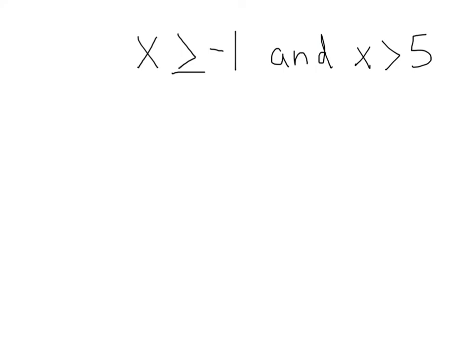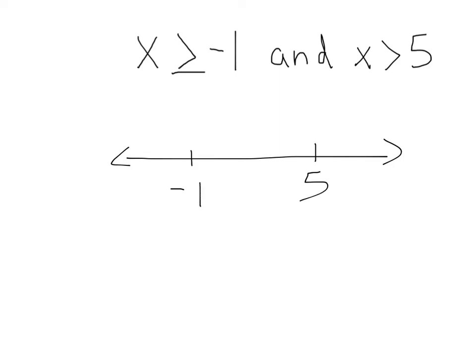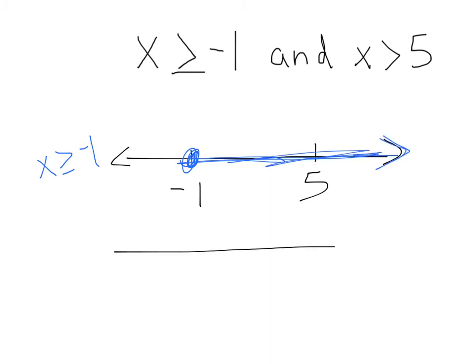For these next couple examples, I'll save time by skipping the solving step since they're already solved — but remember, you have to solve first if they're not. We have x is greater than or equal to negative 1, and x is greater than 5. Let's draw our number lines with important numbers negative 1 and 5. Graphing x is greater than or equal to negative 1: closed dot, shaded all the way to the right. Then x is greater than 5: open dot, shaded to the right.